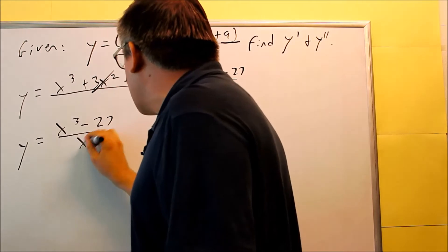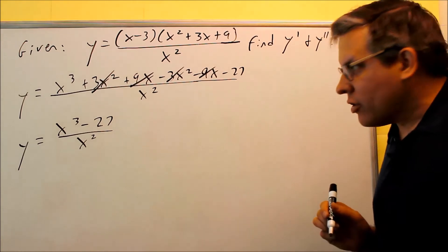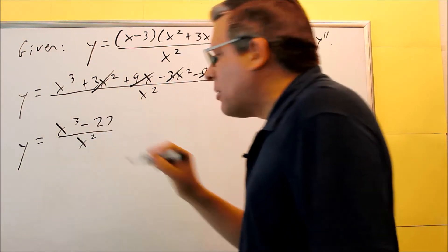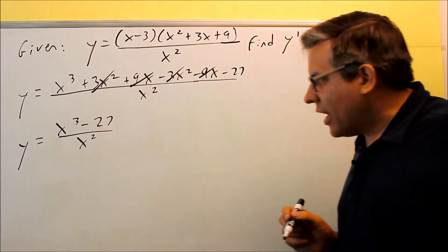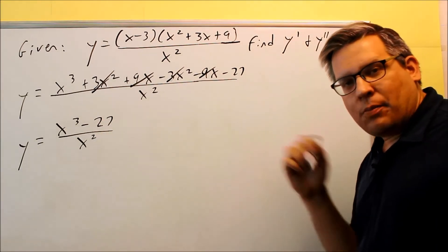Now, this is something that we could apply the quotient rule if we wanted to at that step. However, instead of doing that, let's instead take everything on top and divide it by x squared, because by doing that, we're going to get two separate terms, and then all we have to do is apply the power rule.